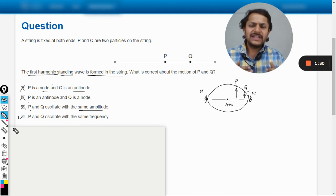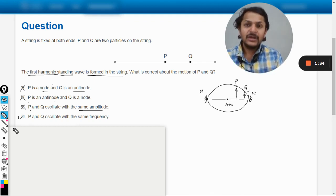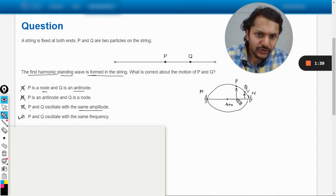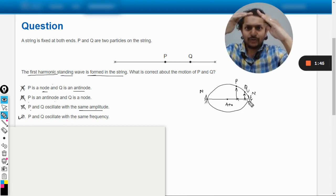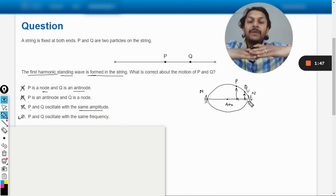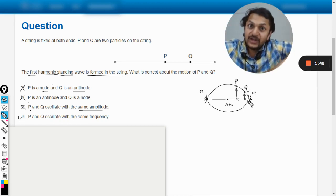What is option D? P and Q oscillate with the same frequency. Now what does it mean? It only means that particle P and particle Q are consuming the same time for completing one oscillation. Let us see. Both of these particles are at the zero displacement at the same time, they go to the amplitude at the same time, and then they come back at the same time.